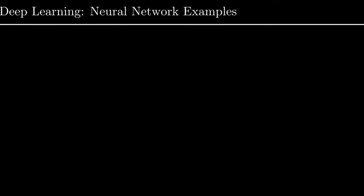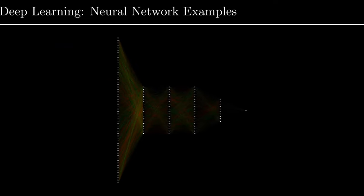One example of things neural networks are used for — talking about regression here — is a model that could predict the total energy of a one-dimensional system to solve the Schrödinger equation. On the left you can imagine the external potential on a real-space grid, and on the right the total energy of the system. The external potential would feed in and propagate through all of these weights and biases until you get the one value at the end, which would be your total energy. If you had many examples of external potentials and energies, you could train the weights of this network via gradient descent so that given a new external potential you can predict new energies.